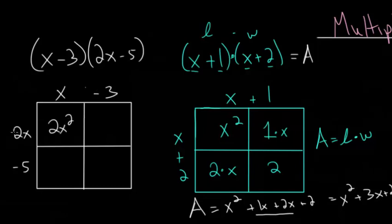This would be 2x squared. Minus 3 and 2x would be minus 6x. x and minus 5 would be minus 5x. And minus 3 and minus 5 would be positive 15.